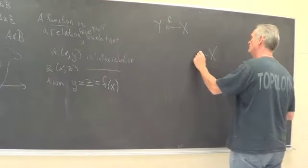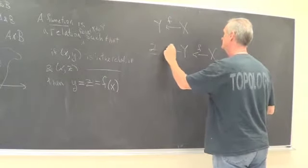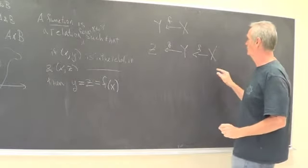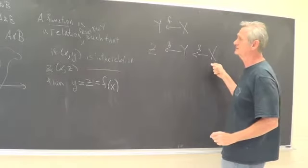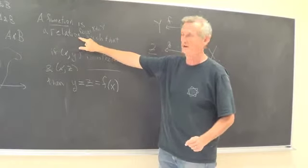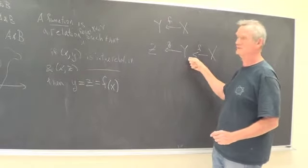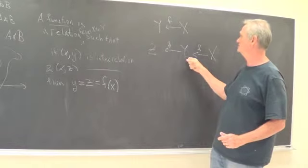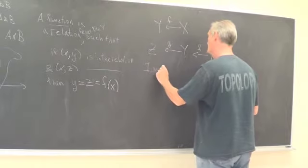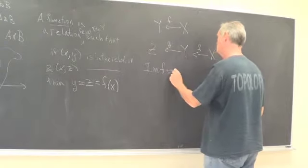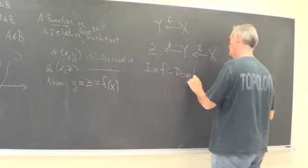So if you have a function from X to Y and you have a function from Y to Z, I guess I need a little bit more notation here. The domain of the function is the set of X's for which we're in the relation and the image is the set of Y which land in the relation. And so in this case we need that the image of F is equal to the domain, or rather is contained inside the domain of G.